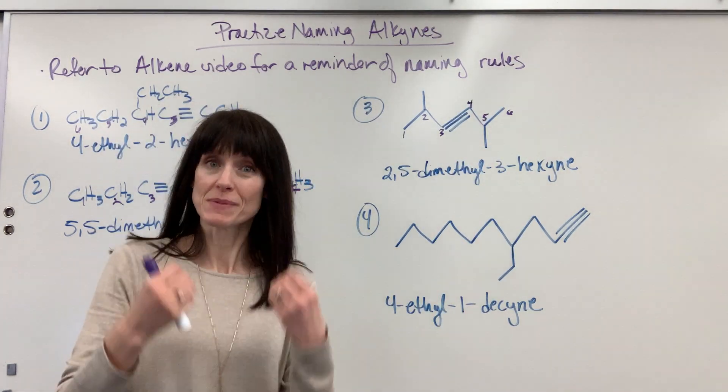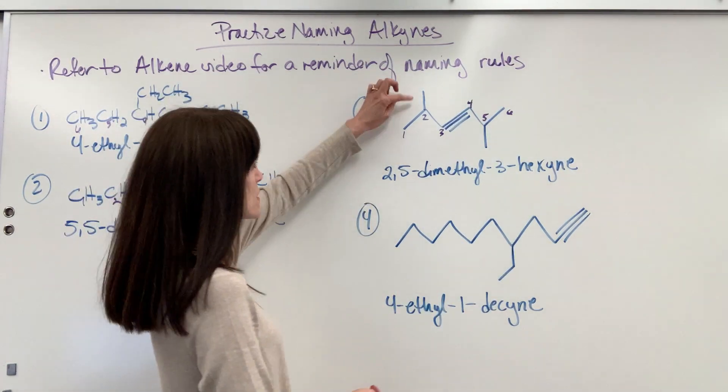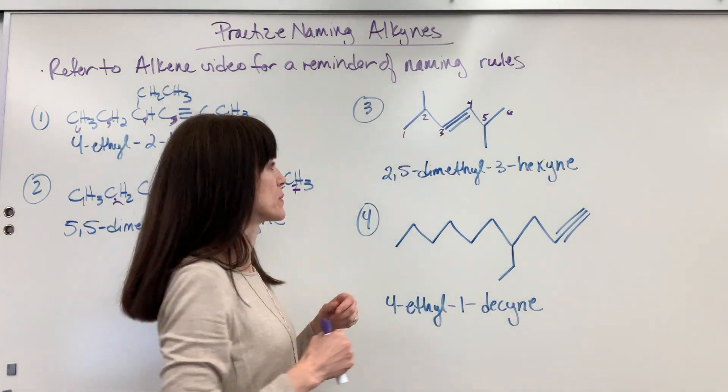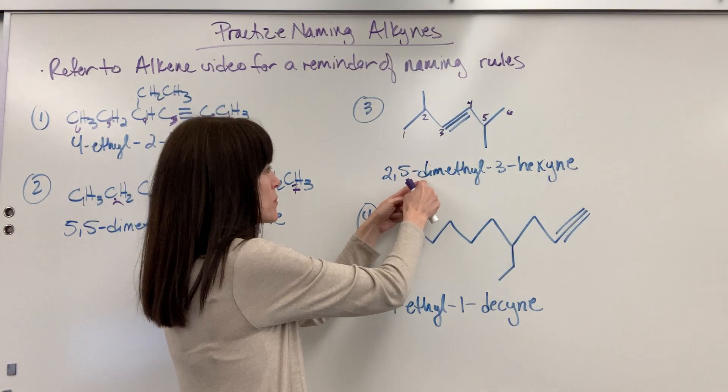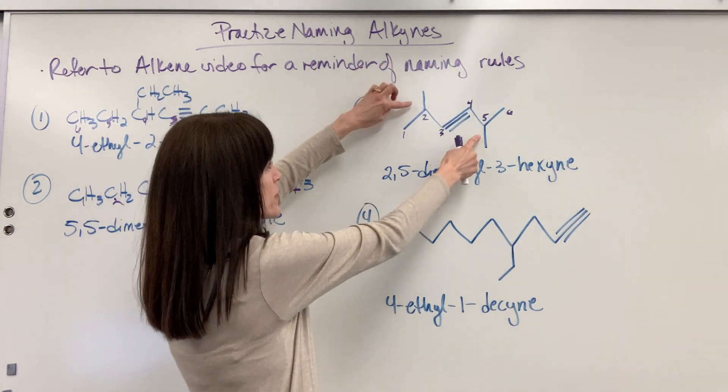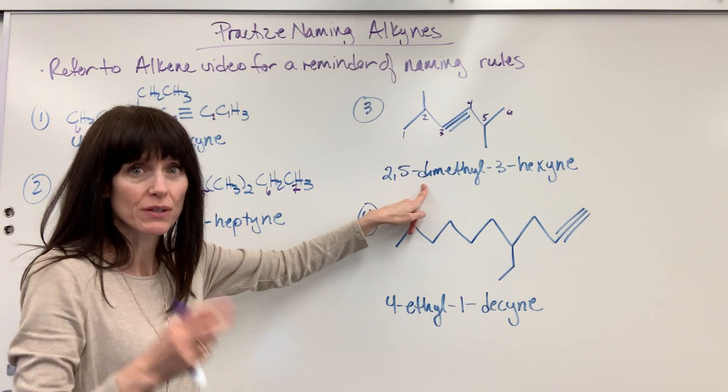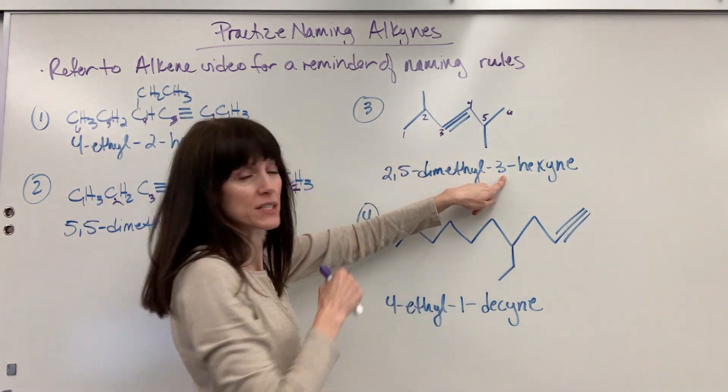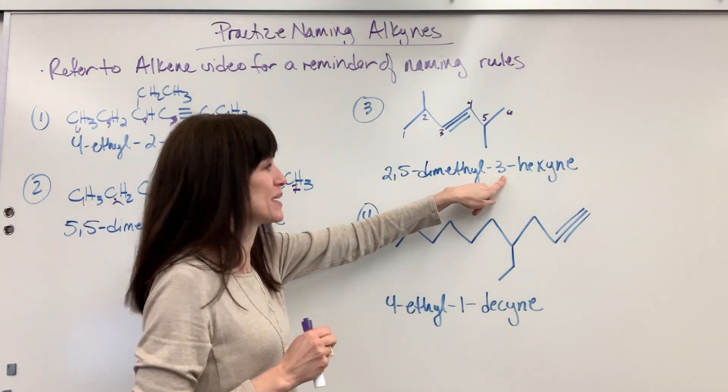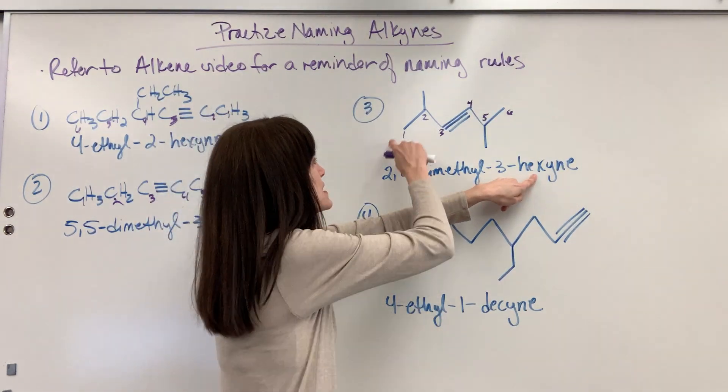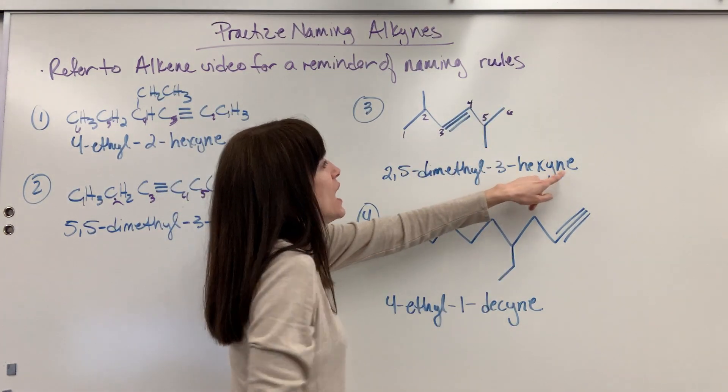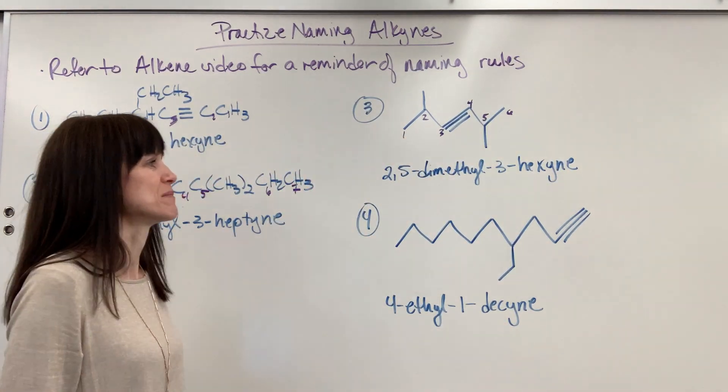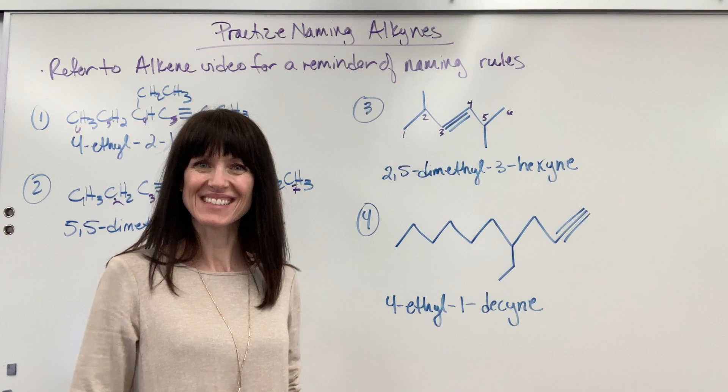Let's begin with our substituents. Our substituents are on the two and five. So two comma five to separate the two numbers. Then we do a dash between the number and the letter. The two methyl groups, I say di-methyl, to tell the reader we've got two of those. And then the first carbon to touch that triple bond, carbon number three. Three hex, the longest chain is six, ine for that triple bond. One more time. Two, five, di-methyl, three hexine. Nice. Very good.